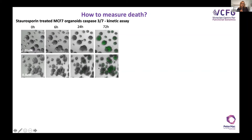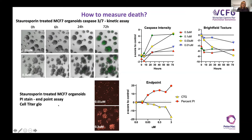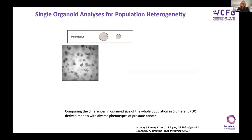For example, with staurosporine and MCF7 structures: at low dose staurosporine, fantastic caspase activity; at high dose, everything is falling apart and we don't have the same level of caspase activation because we probably missed the imaging window. What works better is looking at bright field texture — you can see straight away that the highest dose shows the greatest change in bright field texture. We can also do it fluorescently, imaging with PI as an endpoint and then using Cell Titer Glo, showing statistically significant increases in PI and significant reduction in cell viability.